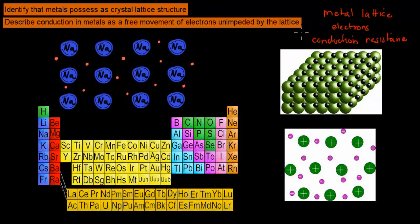The reason why is because the dot points say identify that metals possess a crystal lattice structure, so that's the first part. And then also describe conduction in metals as the free movement of electrons unimpeded by the lattice. So first you should know that basically any metal element, whether it be sodium or titanium or boron or any of the other ones, they all possess something called a crystal lattice structure.